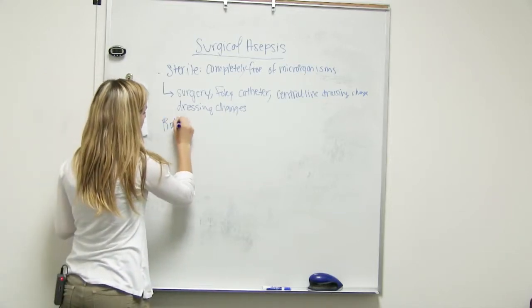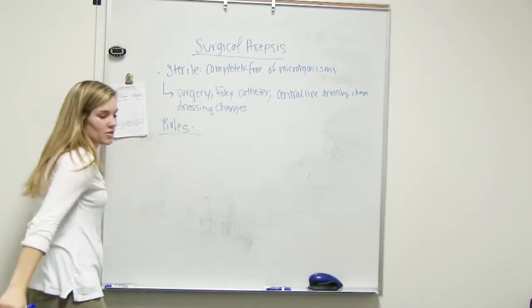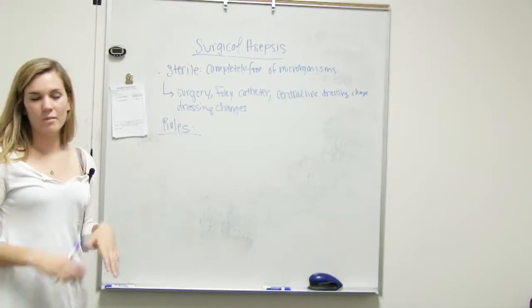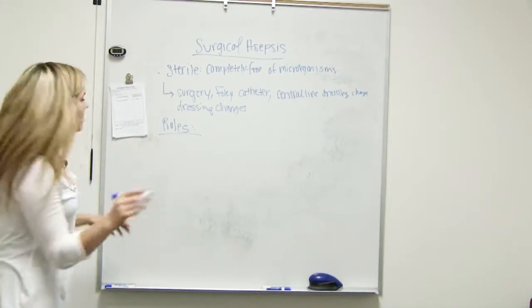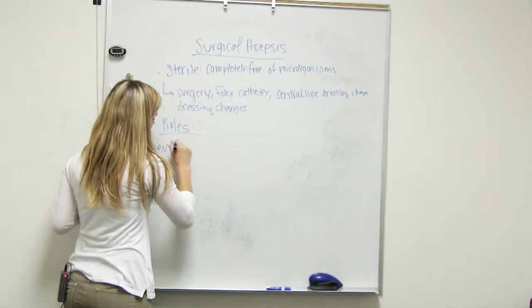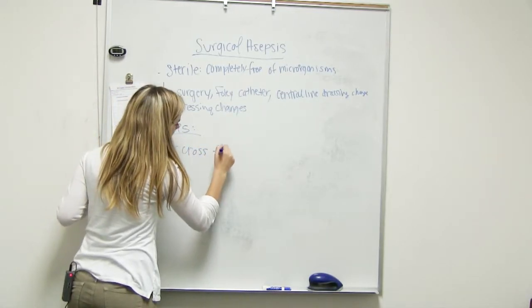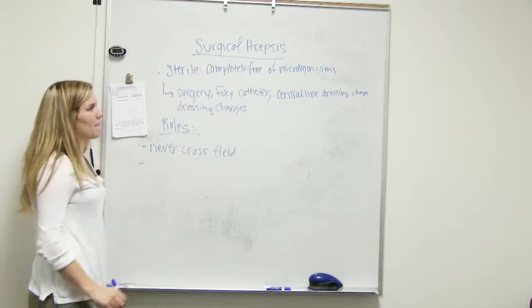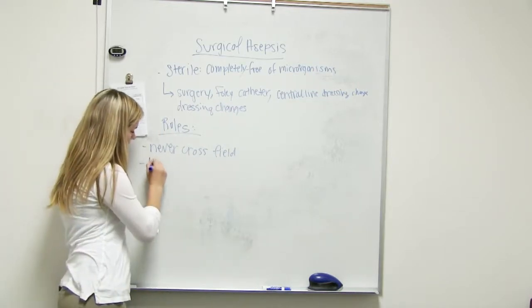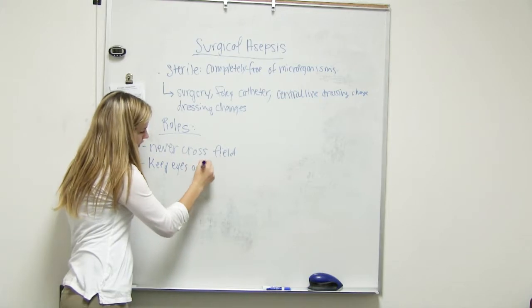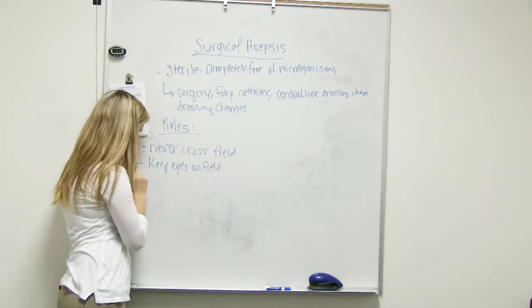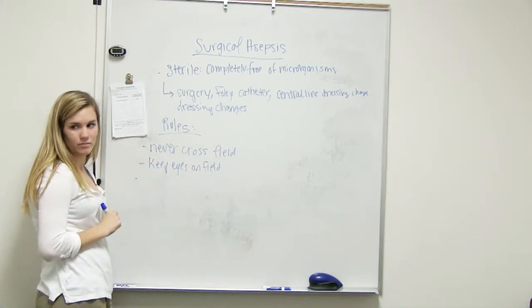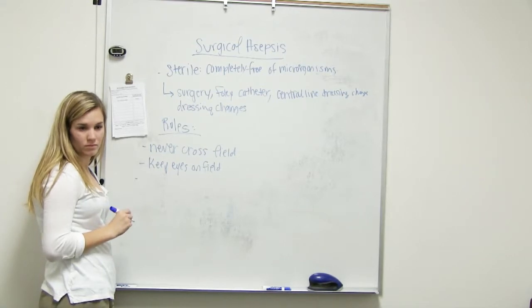So when we are sterile, when we build a sterile field, there's a bunch of rules. What are they? They could be like never cross field. Never cross field. Perfect. So don't like reach over it. What else? Never turn your back to it. Yep. So keep eyes on field. Or else like how you do not stay sterile.